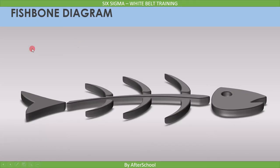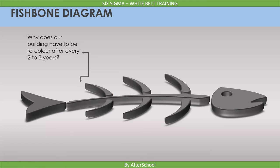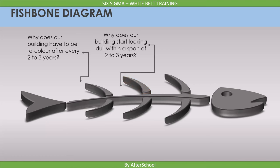The administrator is the person who will ask questions. The first question is: why does our building have to be recolored every two to three years? The answer: because the building starts looking dull within that period. Taking that answer into account, the administrator frames the second question: why does our building start looking dull within a span of two to three years? The answer: because we see feces of birds, especially pigeons, on our building.